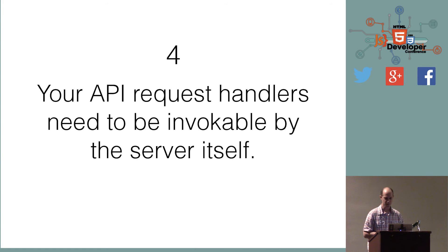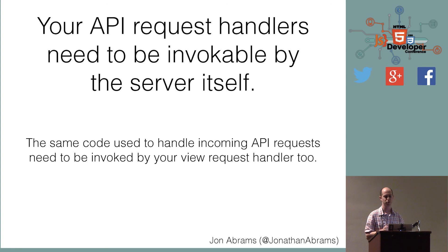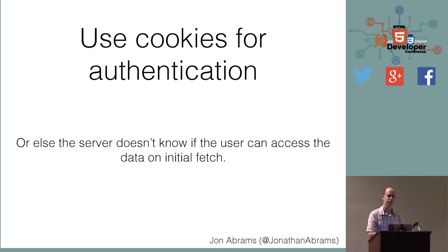It would also be helpful if your API request handlers can be invoked by the server itself, so that the code rendering the view can also invoke the API call. If the API is handled by a separate machine, the server handling the view request can simply hit that API. If it's the same app, construct it so the API can be called by the view. Another key thing: if you want to pre-fetch data protected by authentication, you should use cookies for authentication, because when the initial request comes from the browser, the server knows who the user is. If you're using tokens, they may not be sent automatically by the browser. So cookies aren't necessarily dead yet.